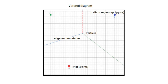Today's video is about a Voronoi diagram. This is the typical Voronoi diagram. Let's talk about the terms first. In a Voronoi diagram, you can see the points — we call those points its sites. We call the polygons containing one site its cells or regions.